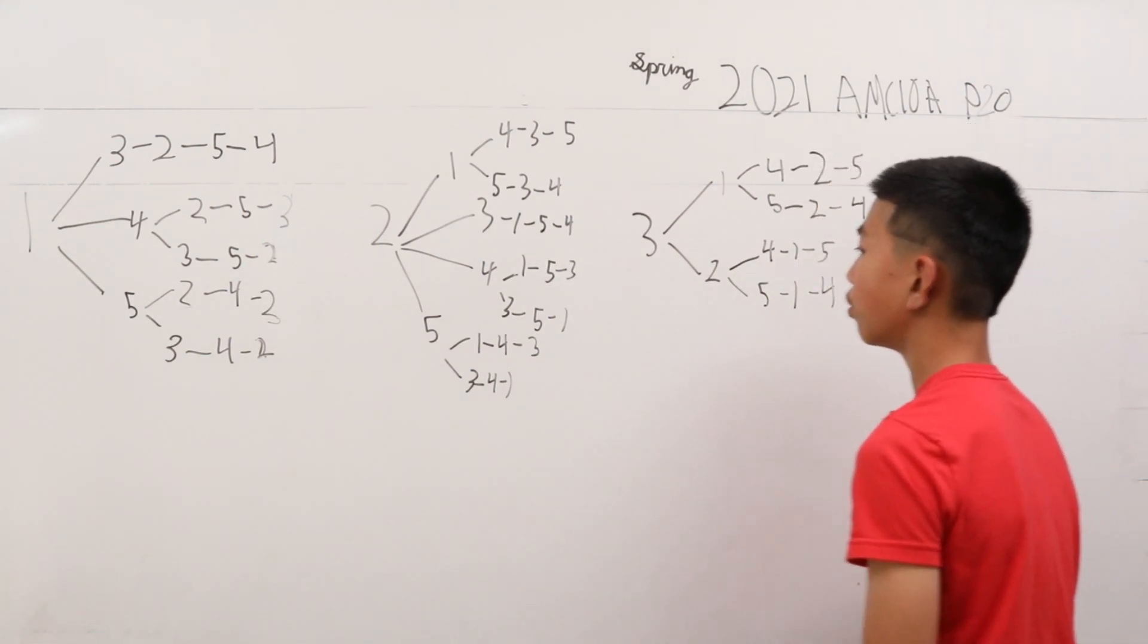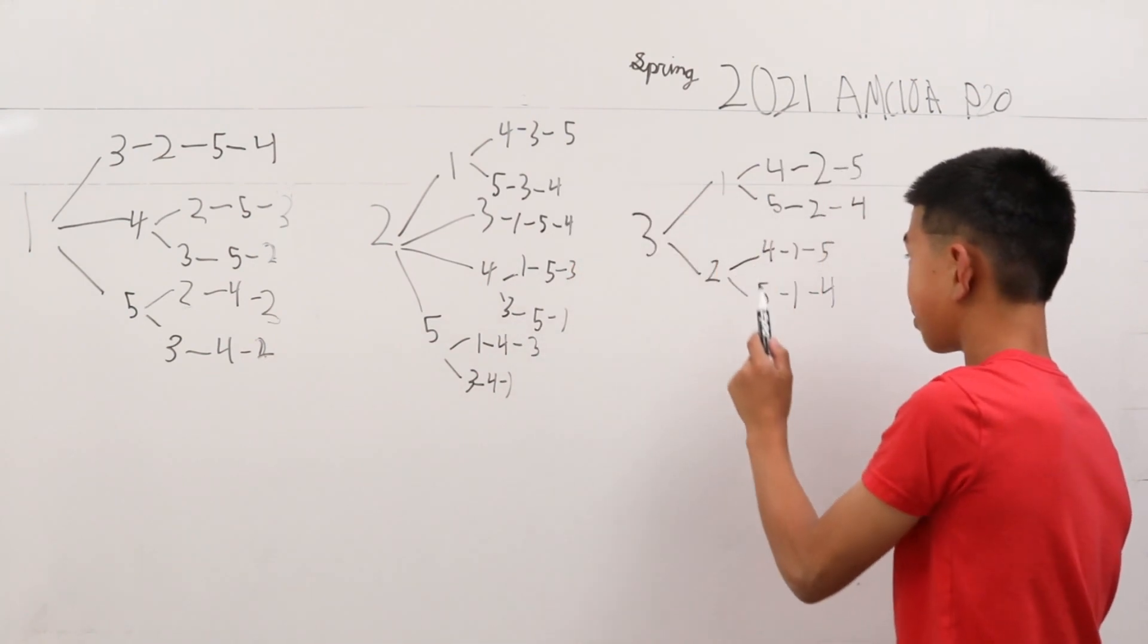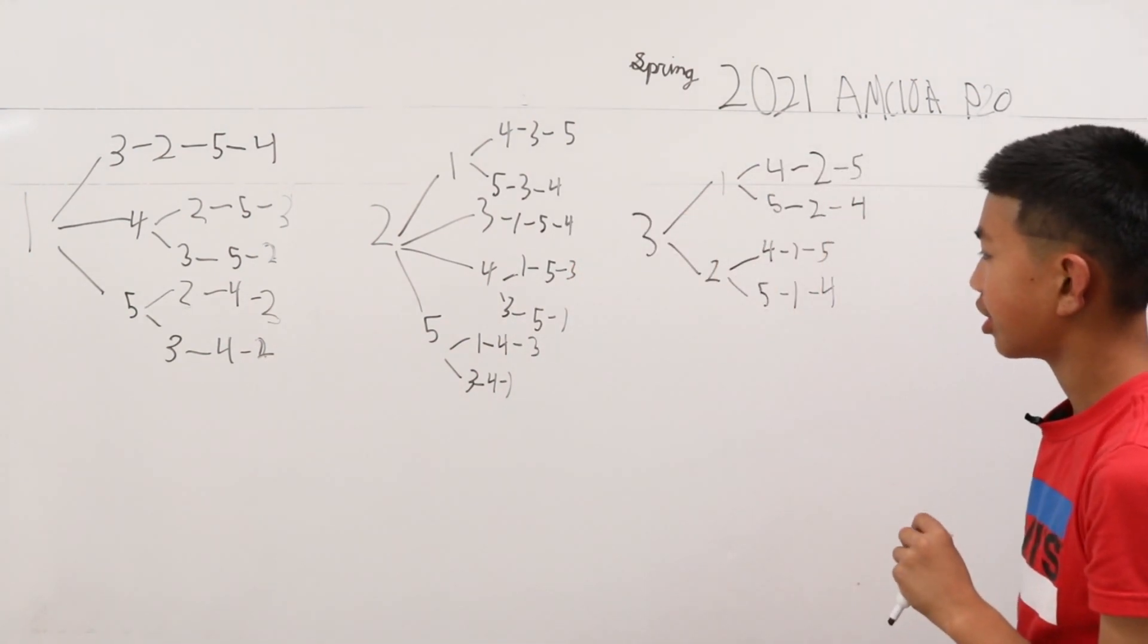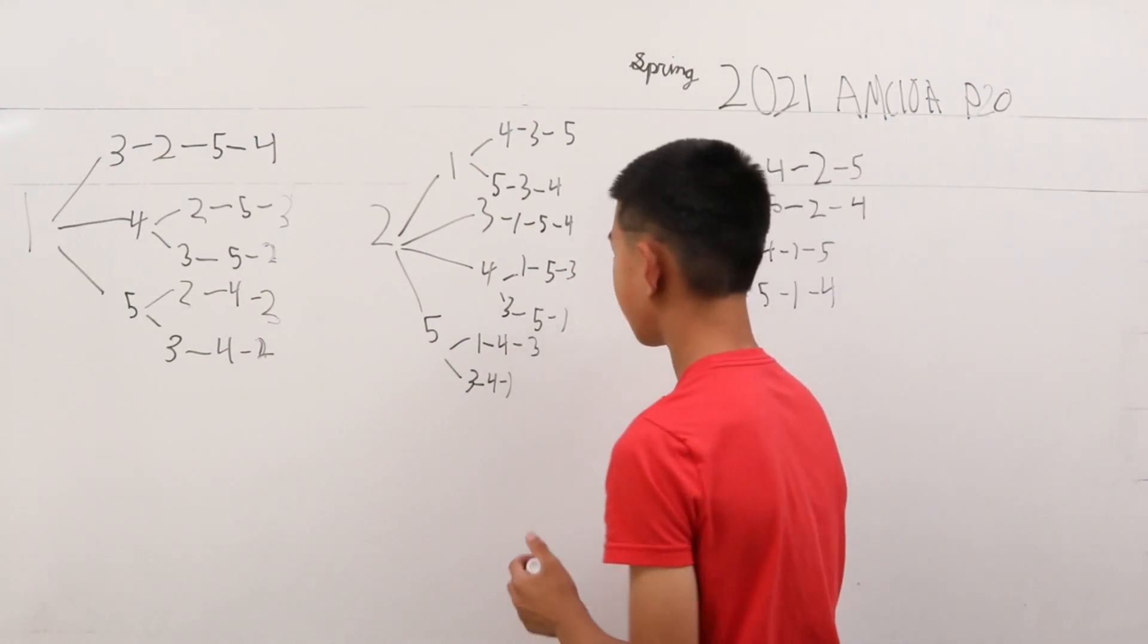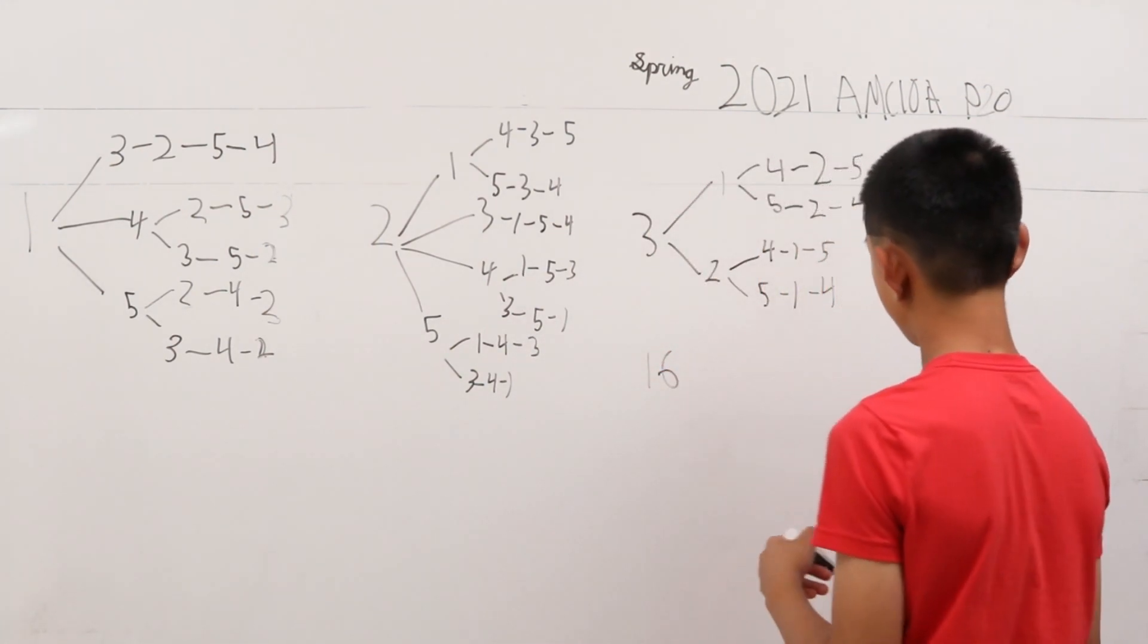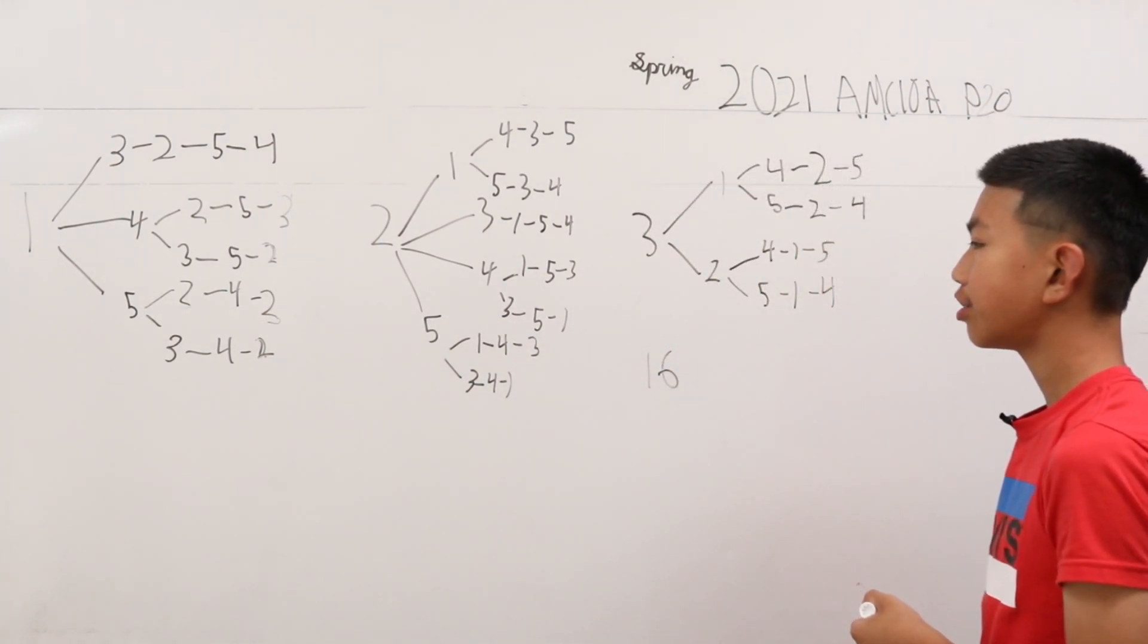But these are only the trees for 1, 2 and 3. There's still 4 and 5 to consider. When we count up the number of possibilities, we get 16 here. But there's still a lot more cases to consider.